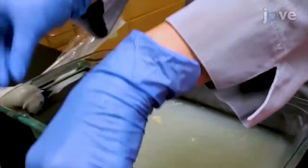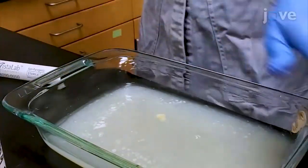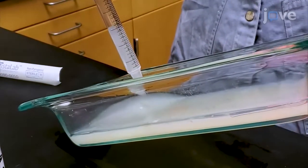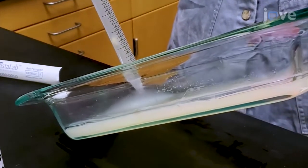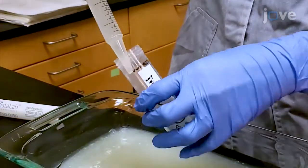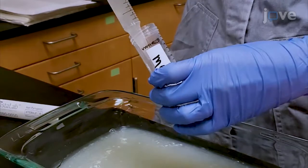Prime a sterile serological pipette with M9. Tilt the plate so that the M9 and worm population gather into one corner of the plate. Use the primed pipette to aspirate the worm suspension and add the worms to a 50 milliliter conical tube. Place the tube on a rocker.